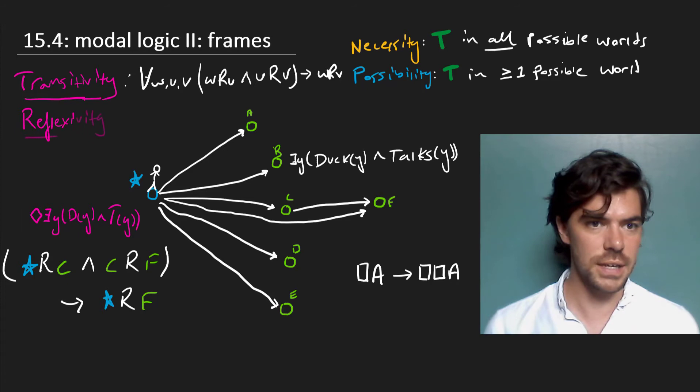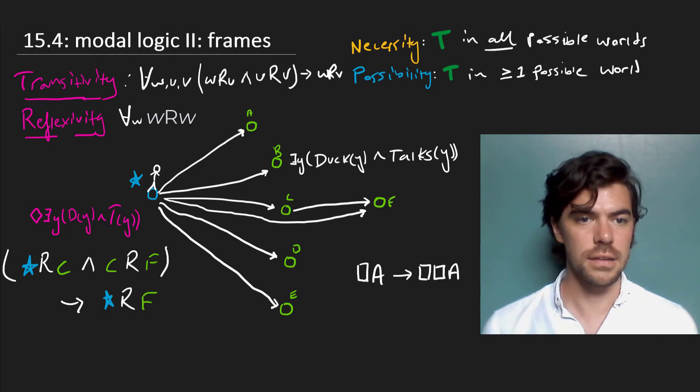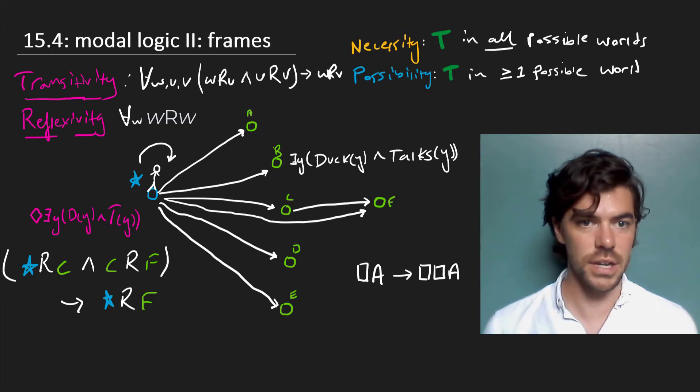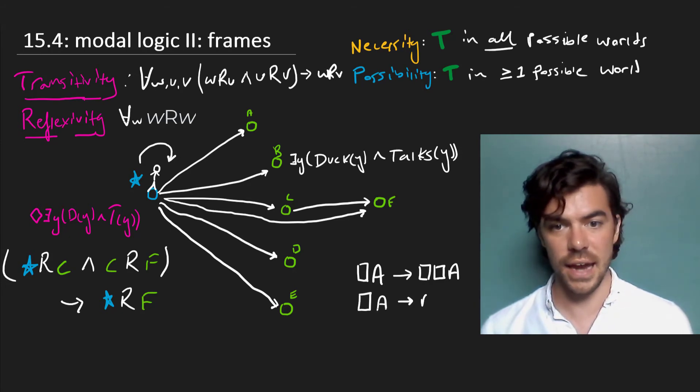But let's think about what happens if we add reflexivity to our relations as well. So we'd say reflexivity holds where, quite simply, every world sees itself. So is it true that our world sees itself? Well, if so, if it has this reflexivity relation, this gets us that whatever holds in all worlds holds in our world. So this gets us the axiom, necessarily A entails A, actually A.